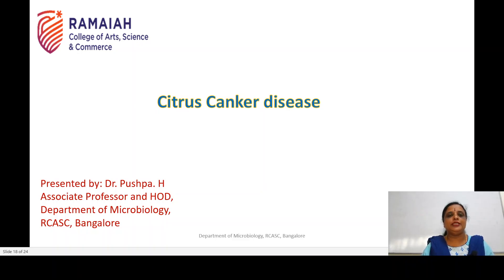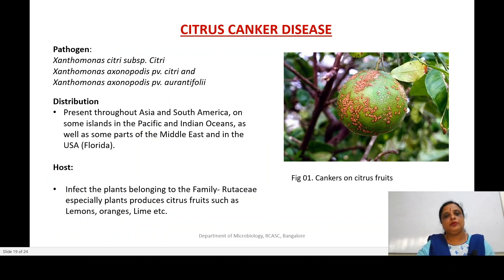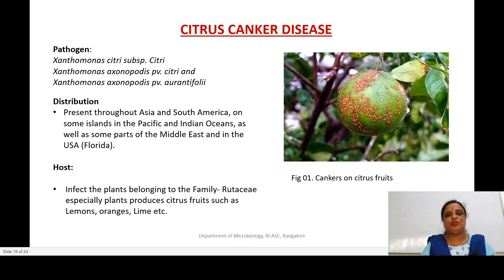Let us study about citrus canker, which is caused by a bacteria Xanthomonas citri. This disease is caused by pathogens called Xanthomonas citri subspecies citri, Xanthomonas axonopodis pathovar citri, and also Xanthomonas axonopodis pathovar aurantifolii. These are the pathogens which cause the disease called citrus canker.